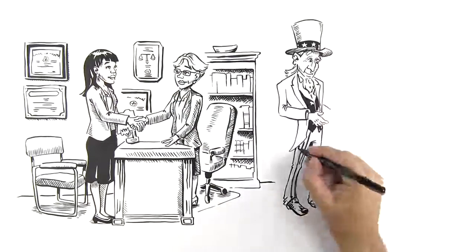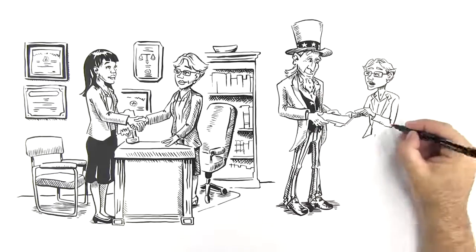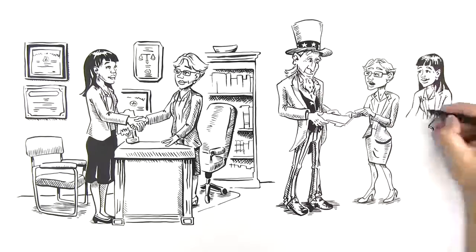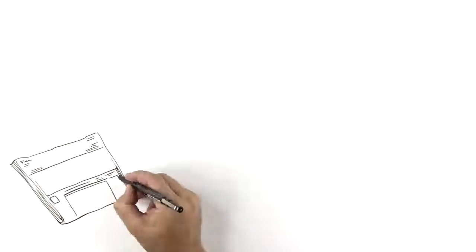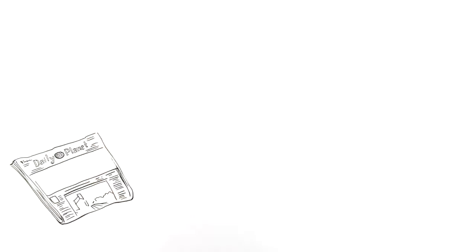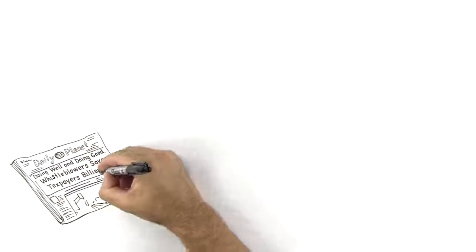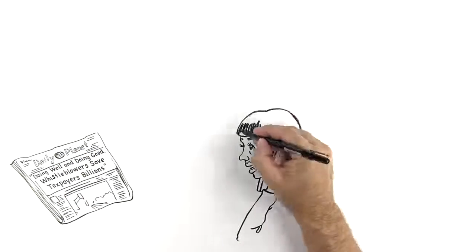Your lawyer will prepare the complaint, which will go to the Department of Justice, which will send it to the defrauded agency, which will investigate. All of this could take anywhere from a few months to a few years or more. During this period, your case will be under seal, which is to say it will remain a secret.